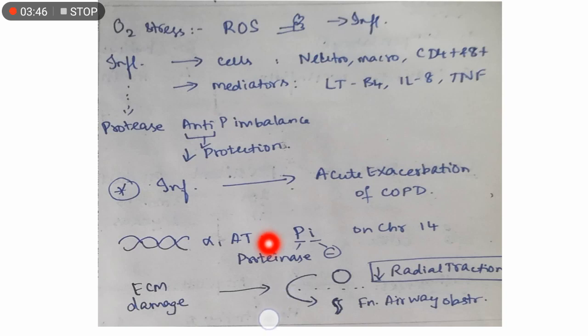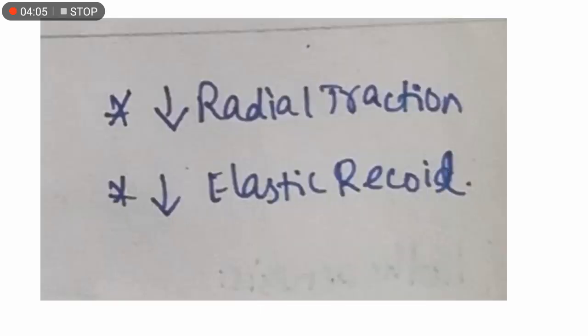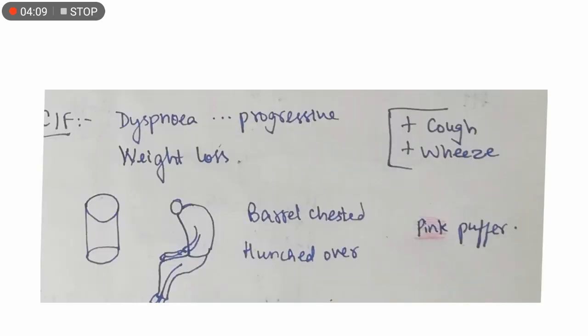Genetic component: alpha-1 antitrypsin is coded by the gene called PI, which is proteinase inhibitor, present on chromosome 14. There will be reduced radial traction in the alveoli, and functional airway obstruction occurs because of extracellular matrix damage, which is the main pathogenesis. The keywords here are radial traction and reduced elastic recoil.